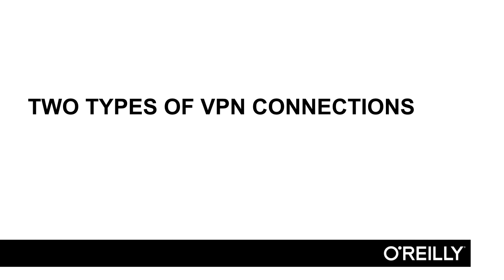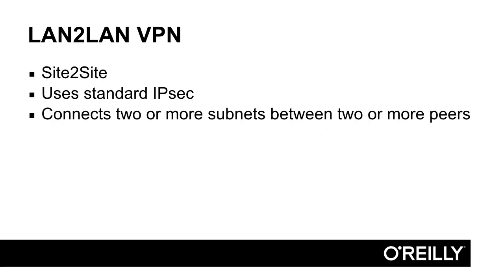When talking about VPN, there are generally two types of VPN connections, and it's important to understand the differences between them. First of all, we have LAN-to-LAN VPNs, which are also sometimes called site-to-site.